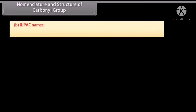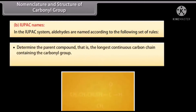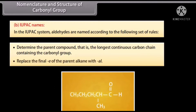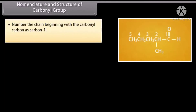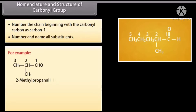In the IUPAC system, aldehydes are named according to the following rules: determine the parent compound, that is the longest continuous carbon chain containing the carbonyl group; replace the final '-e' of the parent alkane with '-al'; number the chain beginning with the carbonyl carbon as carbon 1; number and name all substituents. For example: 2-methylpropanal, 3-bromo-2-methylbutanal.